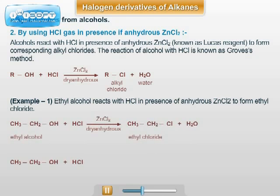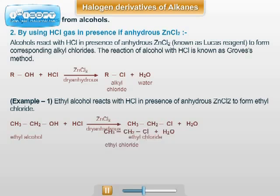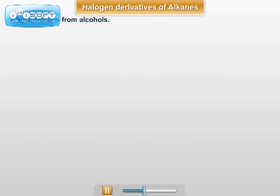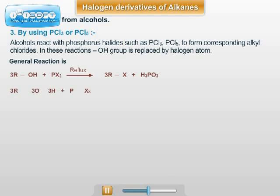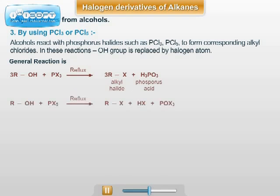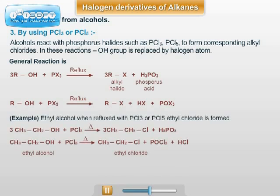For example, ethyl alcohol reacts with HCl in presence of anhydrous ZnCl2 to form ethyl chloride. The next method of preparation of alkyl chloride is by using phosphorus halide. Alcohol reacts with phosphorus halide such as PCl3 or PCl5 and forms the corresponding alkyl chlorides. In this reaction, the OH group is replaced by the halogen atom. For example, when ethyl alcohol is refluxed with PCl3, ethyl chloride is formed.